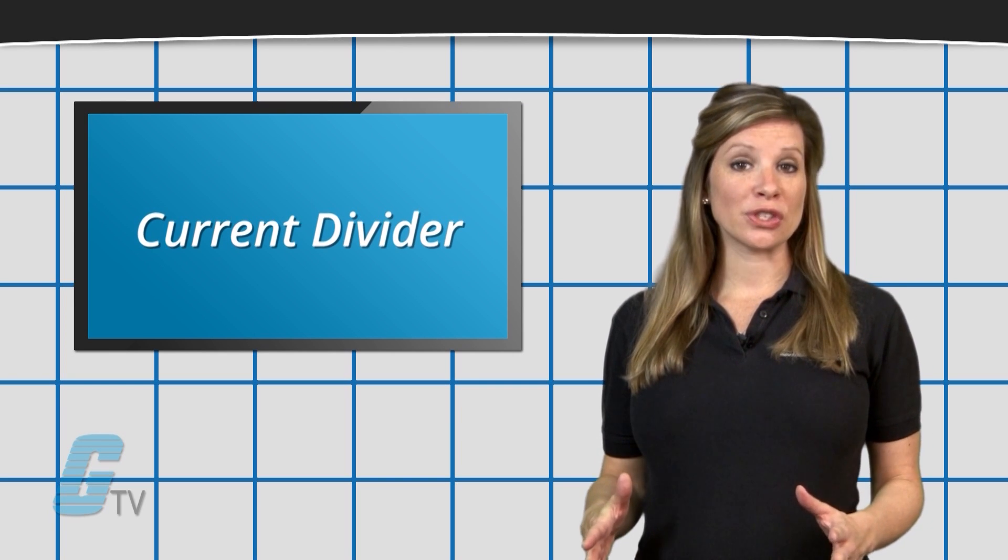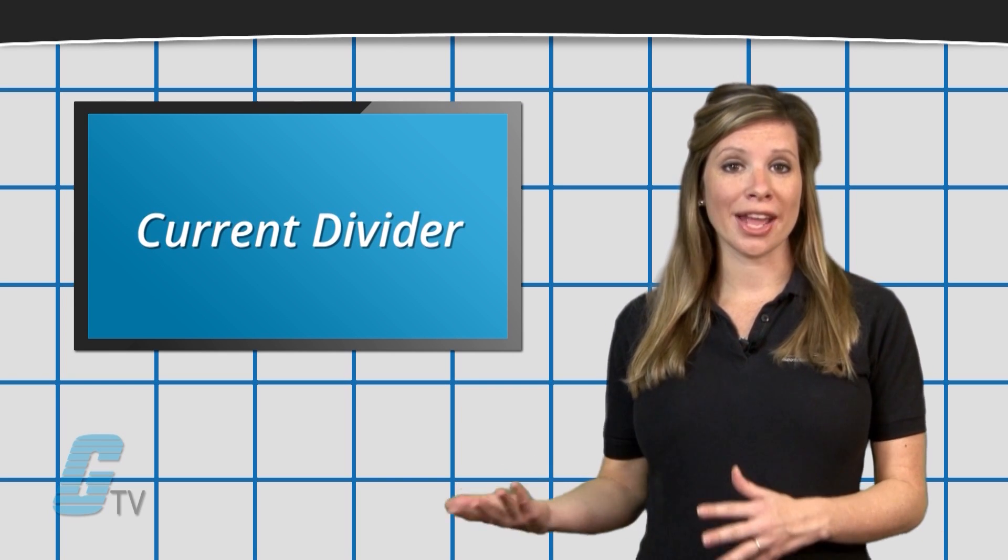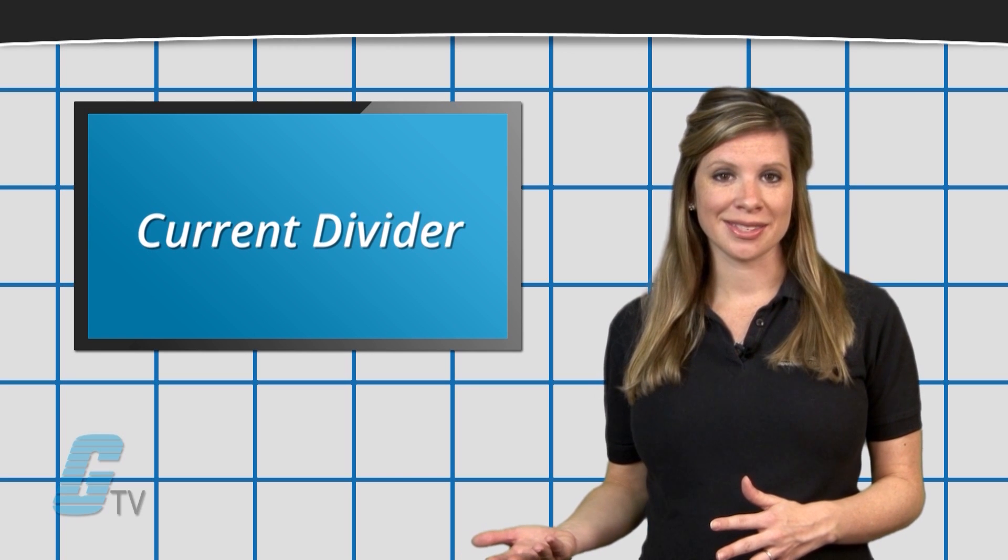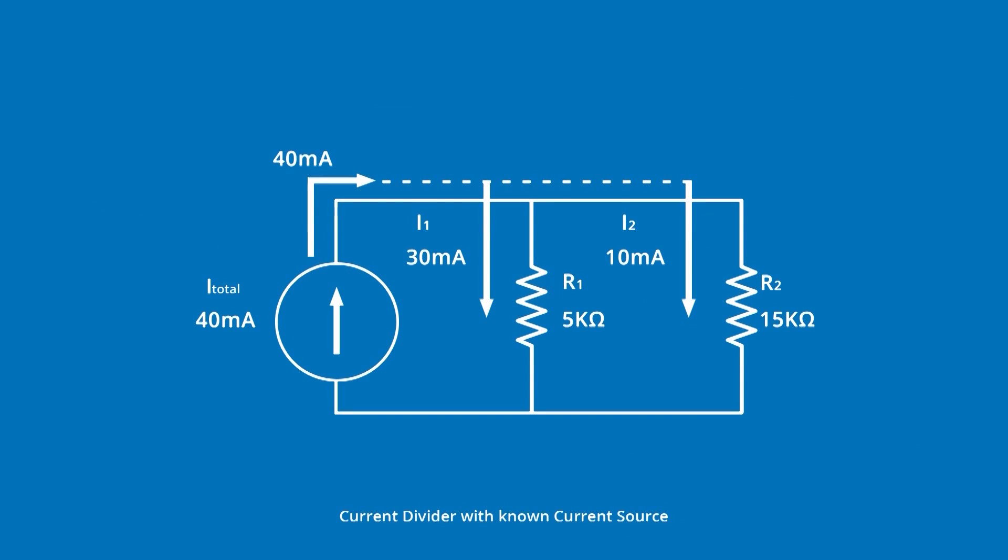Current division refers to the splitting of current between the branches of the divider's circuits. The currents in the various branches of such a circuit will always divide in such a way as to minimize the total energy expanded.